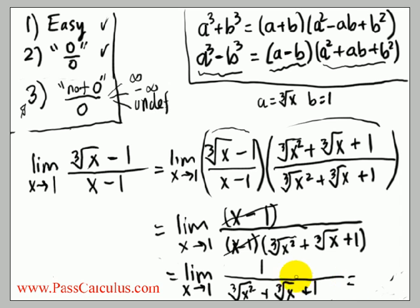And now, this is now a type 1 limit. At the beginning, it was type 2, 0 over 0. But now, it's a type 1, because I can just put in 1 to get my answer. So, I get 1 over, well, 1 squared is 1, cube root of 1 is 1, cube root of 1 is 1. So, I get 1 over 1 plus 1 plus 1, which is 1 over 3. So, that's how you do that.